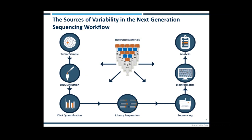As with any assay, each stage within the workflow can introduce variability. The fixation, storage, and formalin intensity for your samples can affect the DNA extraction — something Alessandro will focus on in the next stage of the webinar. This can affect your quantification and the amplifiability of DNA in the library preparation, and can ultimately result in artefacts present within your data.